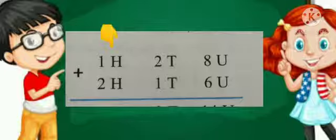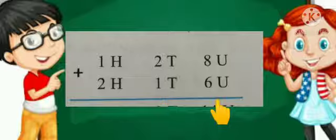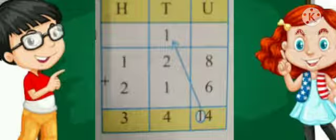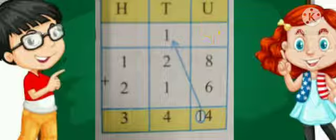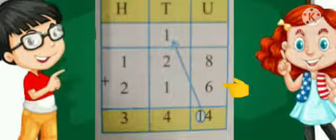Let's take one example. In this slide you can see we have one hundred, two tens, and eight units plus two hundred, one ten, and six units. As per the rule, first we will add the units. On adding eight plus six, we get fourteen units.